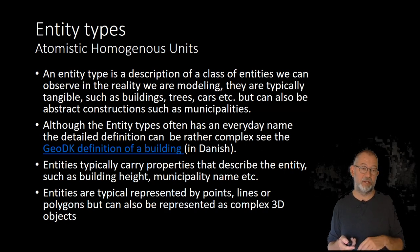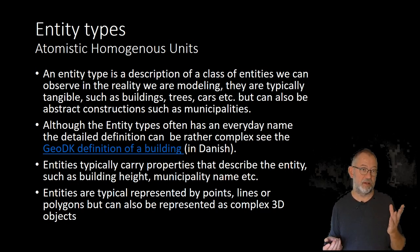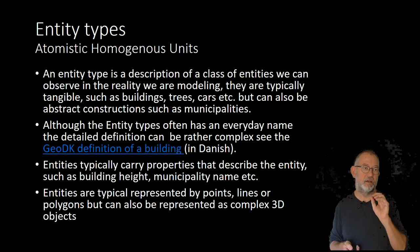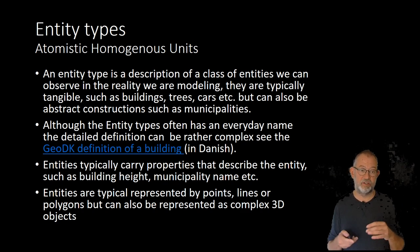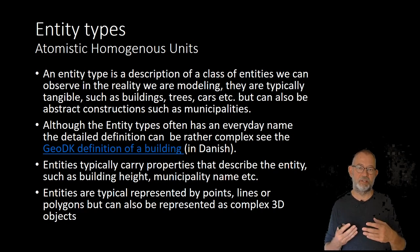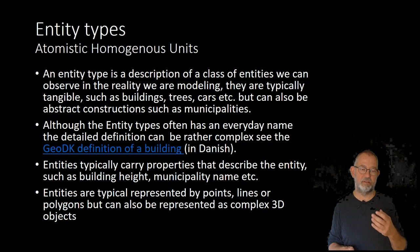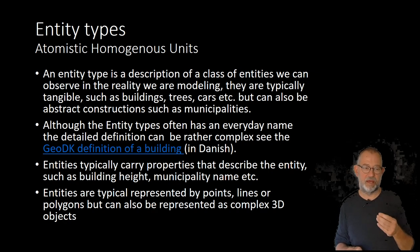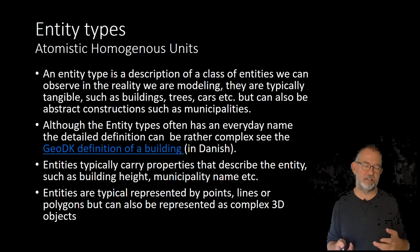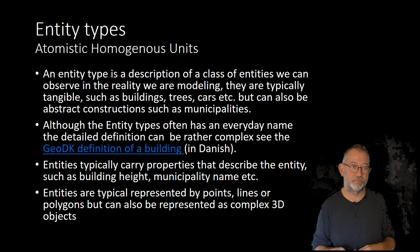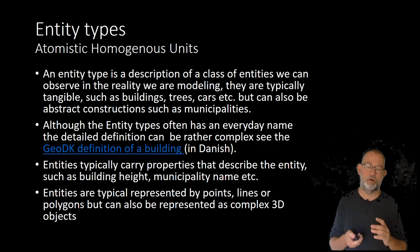So after the trees have been harvested, there will be a period with no trees, but it will still be a forest. These entities have properties — heights, names, and so on — and they are typically represented by geometric objects: points, lines, or polygons or areas. Some Danish municipalities consist of many small islands, so they will have many small areas that together represent the entity of that municipality. We normally talk about them as polygons, but mathematically it's more correct to call them areas. They can also be represented as 3D complex elements, such as a 3D model of a building.